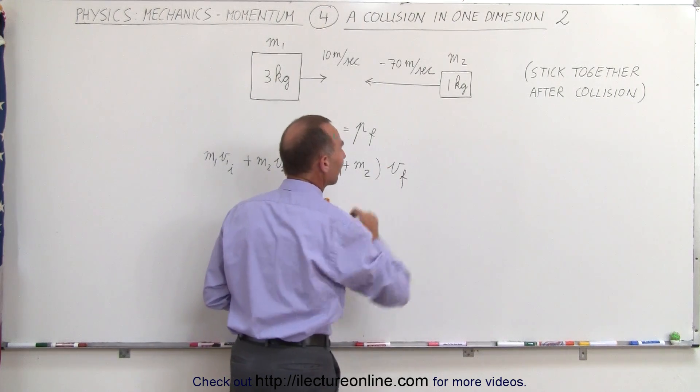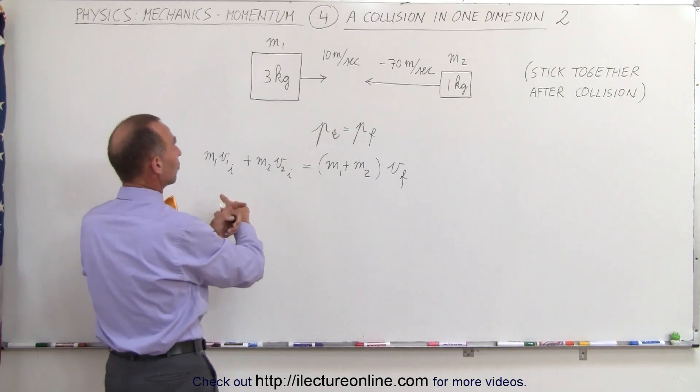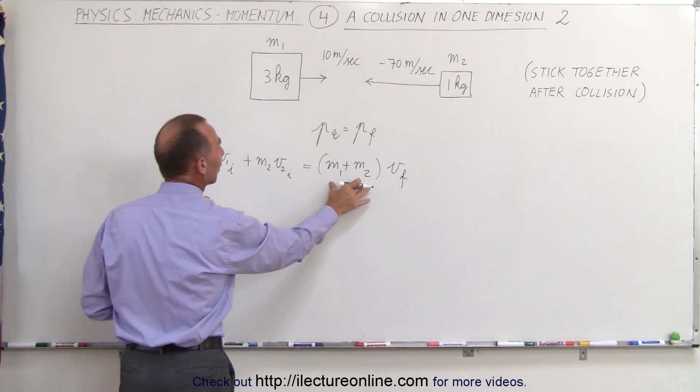And of course the object is to find the final velocity. Solving that for the final velocity, we can turn the equation around, divide both sides by M1 plus M2.